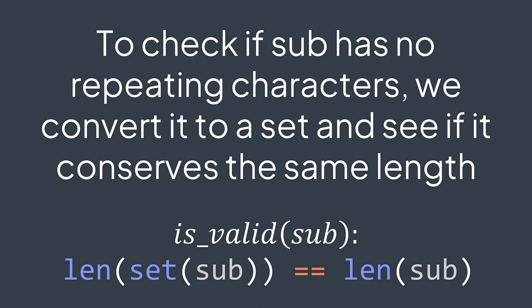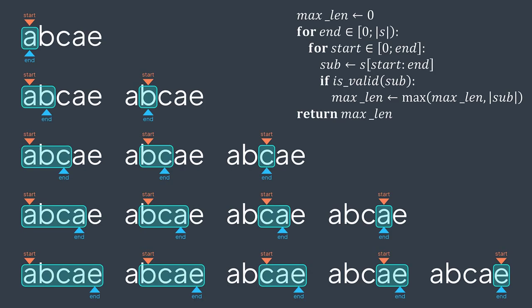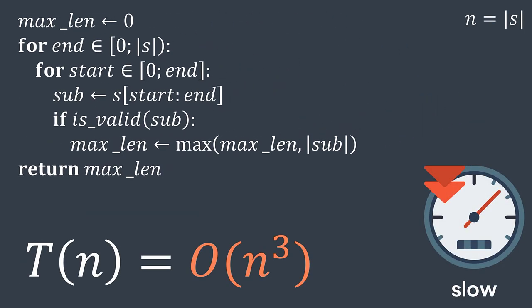After traversing all the substrings, we return max length — the result we're searching for. This solution is quite easy to implement, but it's very slow. We have nested loops plus the cost of extracting and analyzing the substring at each iteration. It gives us a time complexity of O(n³), where n is the length of the string.